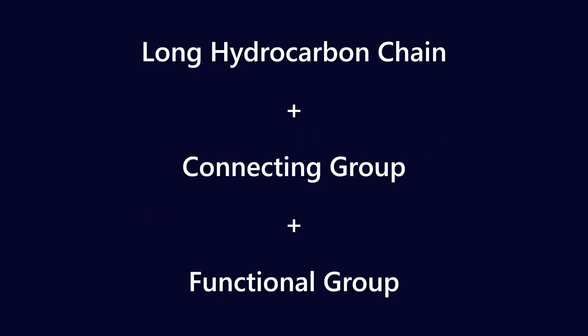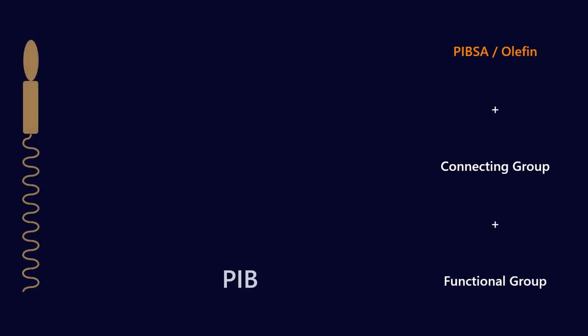So let's take our long hydrocarbon chain, our connecting group and our functional group and see how does that work in practice. The long hydrocarbon chain is usually made of polyisobutylene or an olefin.